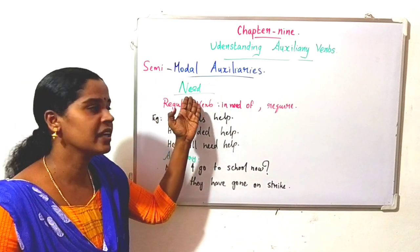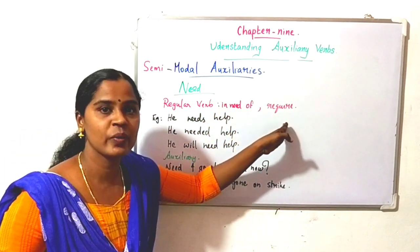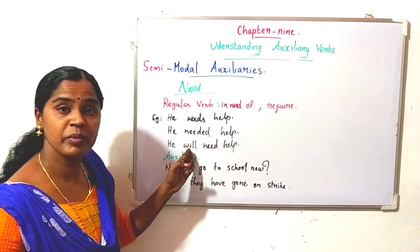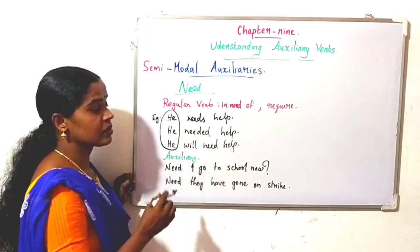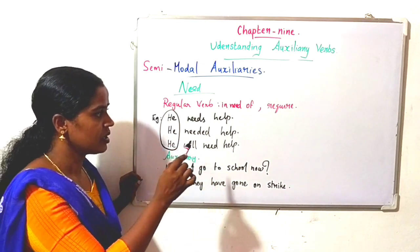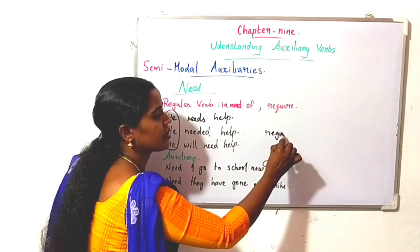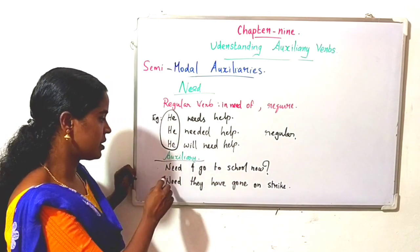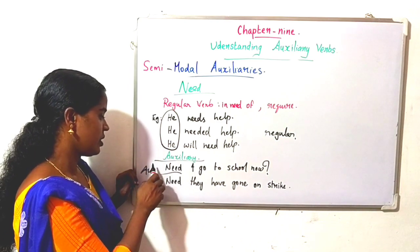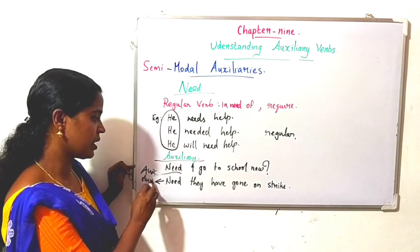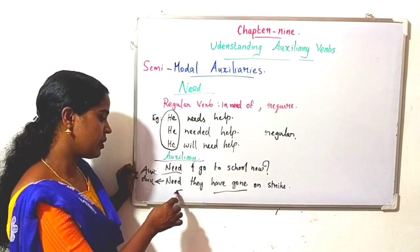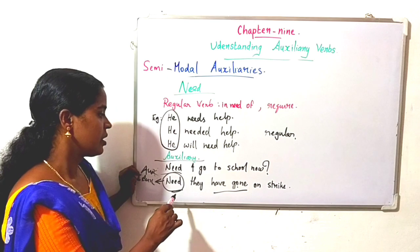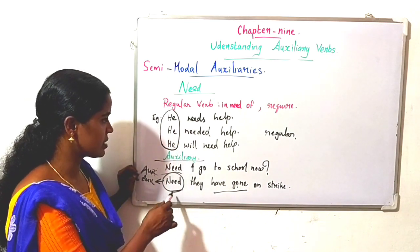The next semi-modal auxiliary is need. As a regular verb, its meaning is 'to be in need of' or 'to require.' It will have yes or es form, ed form, or be used along with another auxiliary. As an auxiliary, need begins the sentence: 'Need I go to school now?' — here it is an auxiliary. It can also appear in perfect form: 'Need not have done' — here too it functions as an auxiliary because it appears sentence-initially with a perfect verb form.